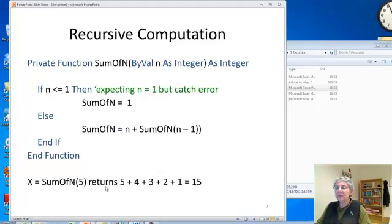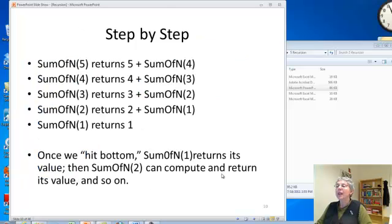And as we were illustrating before, you know, if I call it with 5, then I'm going to get 5 plus sum of n of 4, which is 4 plus sum of n of 3, which is 3 plus sum of n of 2. By the time I work my way down, I will have 5 plus 4 plus 3 plus 2 plus 1, which equals 15. And here it is all laid out for you.